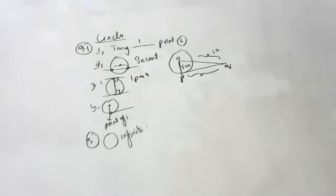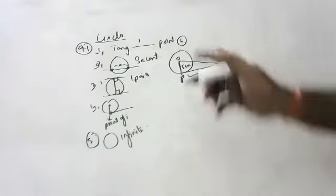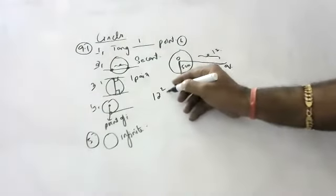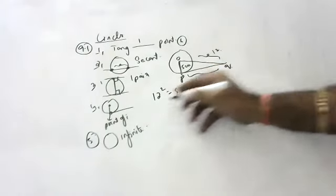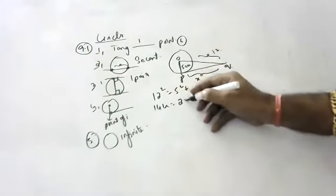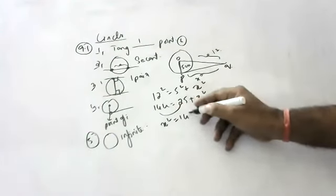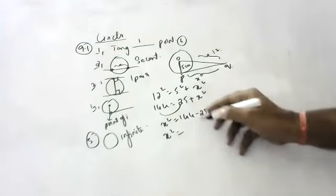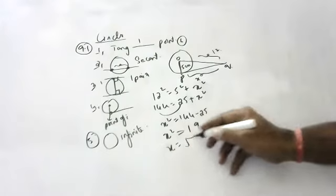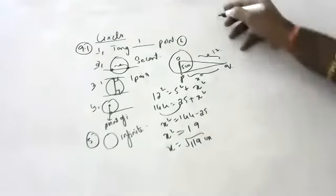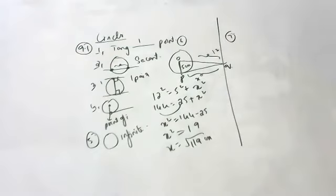By the Pythagoras theorem: OQ squared equals OP squared plus PQ squared. So 144 equals 25 plus x squared. x squared equals 119. x equals root of 119 centimeters.